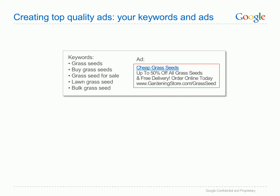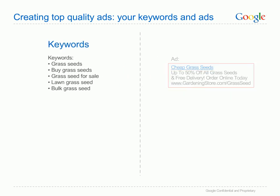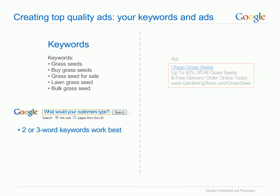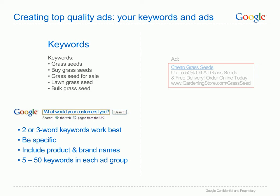Let's take the grass seeds example to explain keywords and ads and how you can use the ad group structure to create top-notch advertising. When writing your keyword list, think about how your potential customers would search for the product or service you're promoting. Remember that keywords people use when searching on Google are often more than one word, and in general two or three keywords work best. Keep them specific to the ad group and product you're promoting, and don't forget to include product or brand names as well as plurals. A small group of targeted keywords is far better than a large group of untargeted keywords. Try to aim for between 5 and 50 keywords in each ad group.